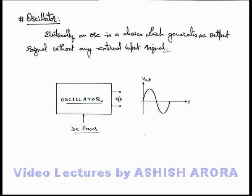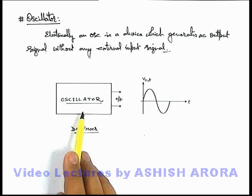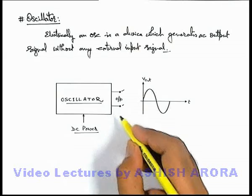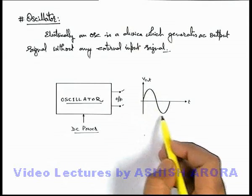You can see this is the block diagram of an electric oscillator. Here this oscillator is fed with a DC power supply, and on its output terminals we get an alternating current output.